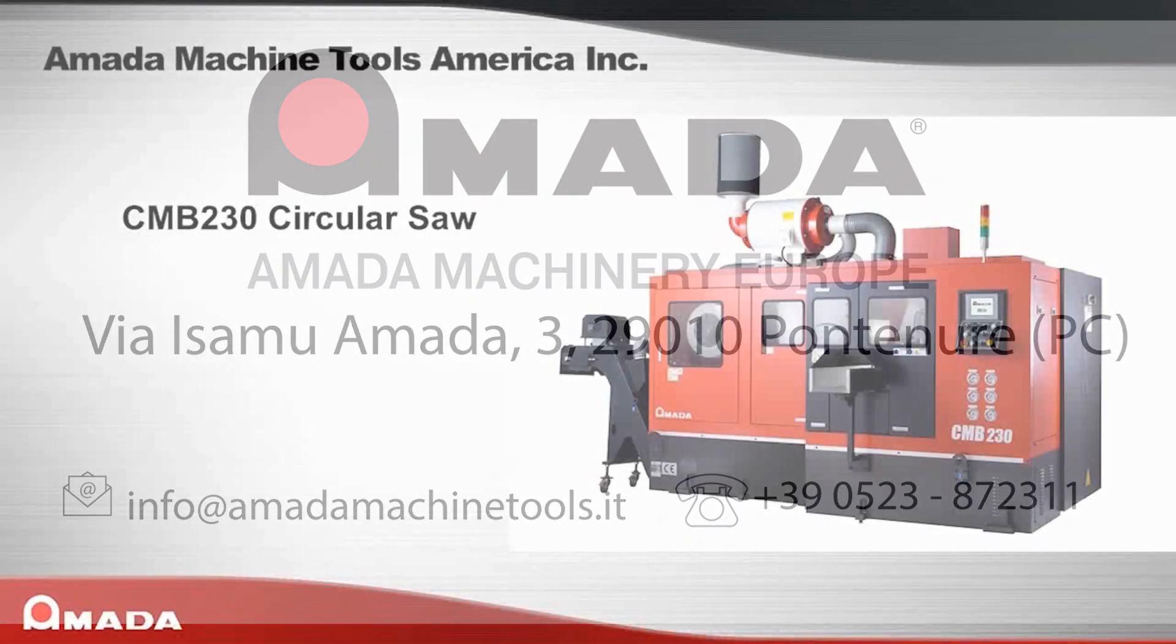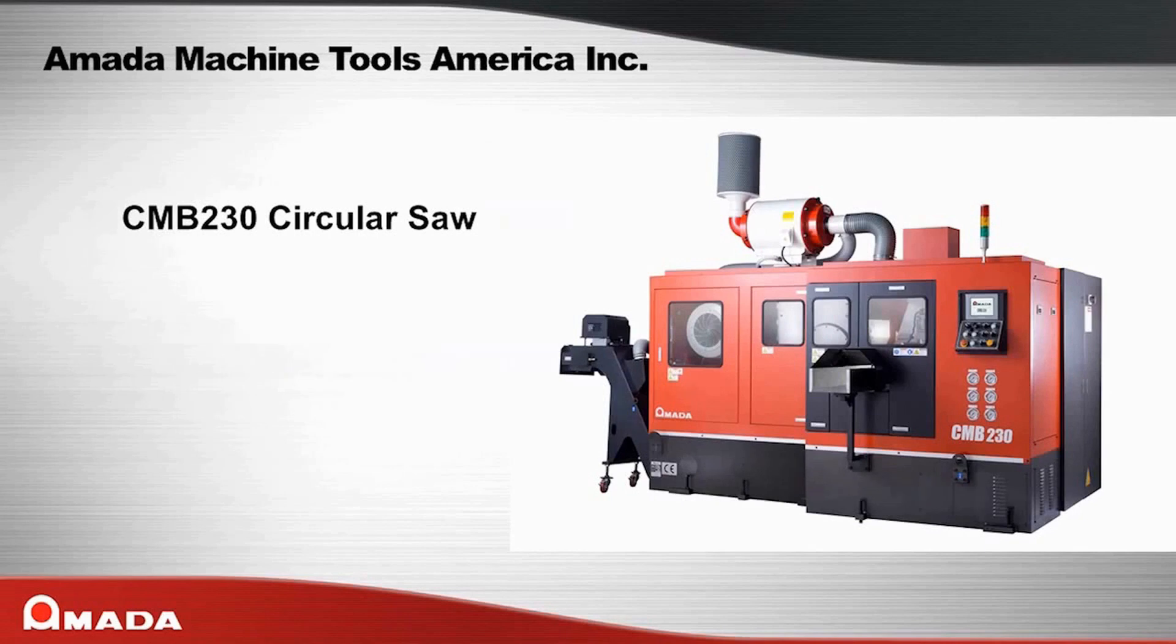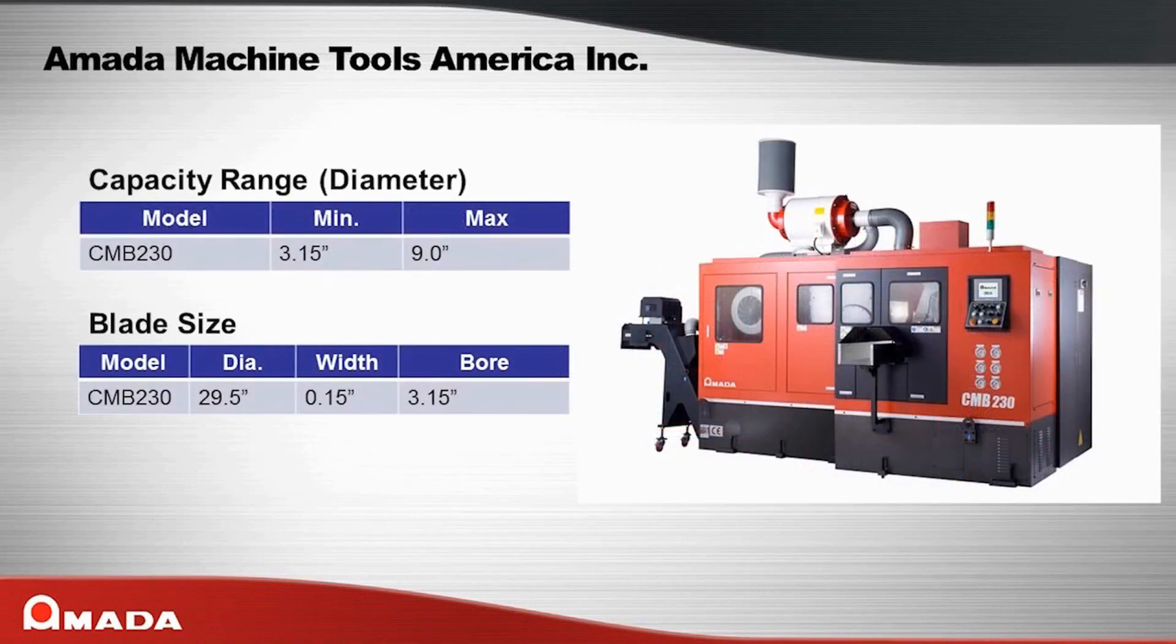The CMB230 circular saw is for high production sawing of materials up to 9 inches in diameter. With its heavy construction, the CMB230 handles some of the toughest steel with ease, accuracy, and efficiency.